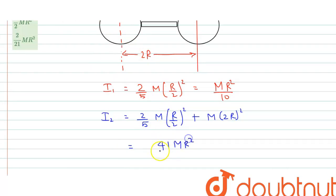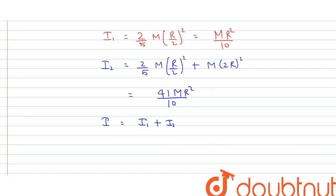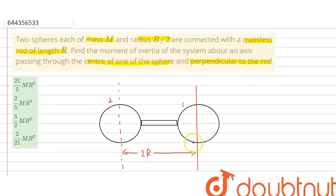Now the total moment of inertia of this system equals I₁ plus I₂, so 41/10 plus 1/10, which equals 42/10 mr², or 21/5 mr². This is the moment of inertia of the system about this axis, so the first option is correct. I hope you have understood the explanation. Thank you.